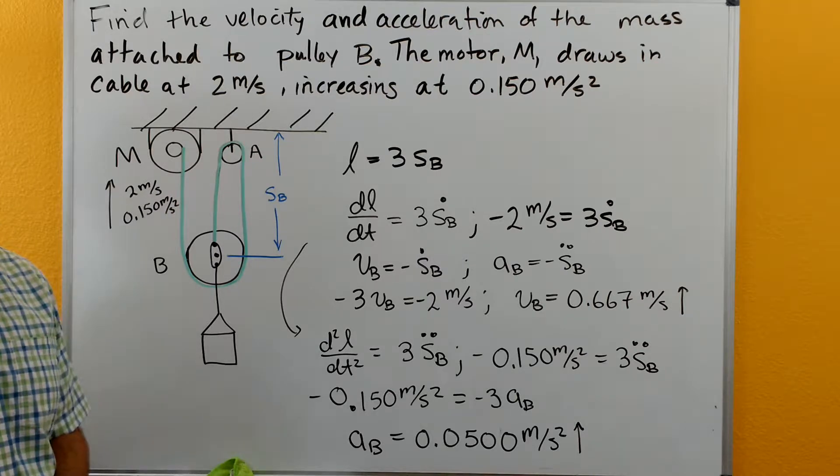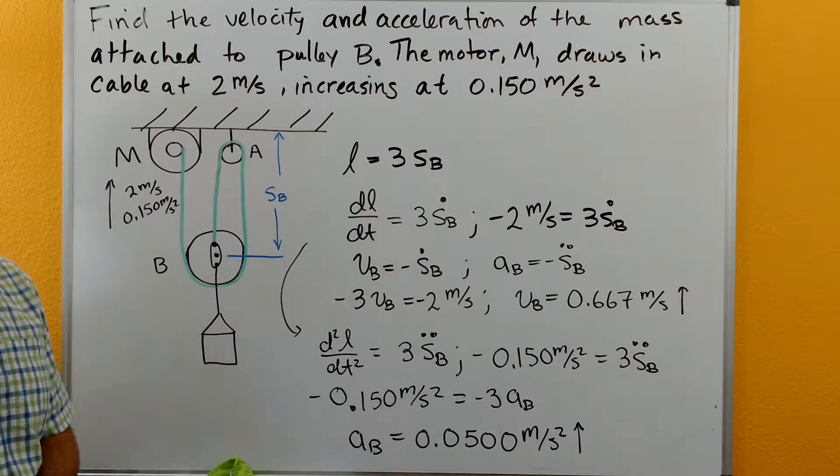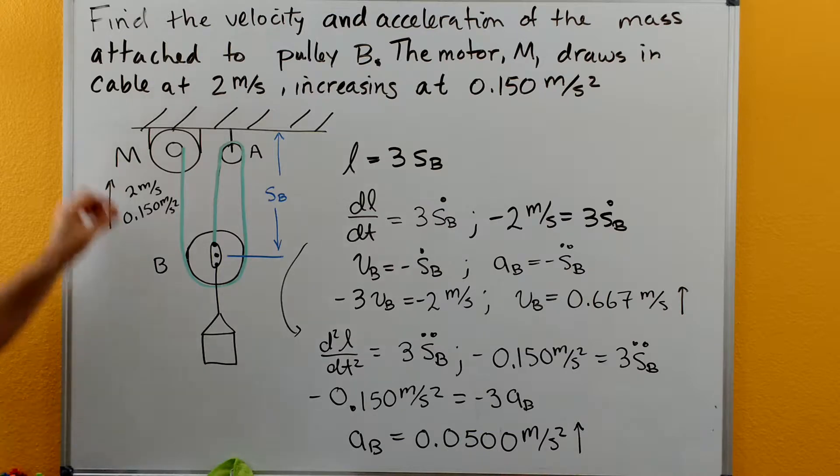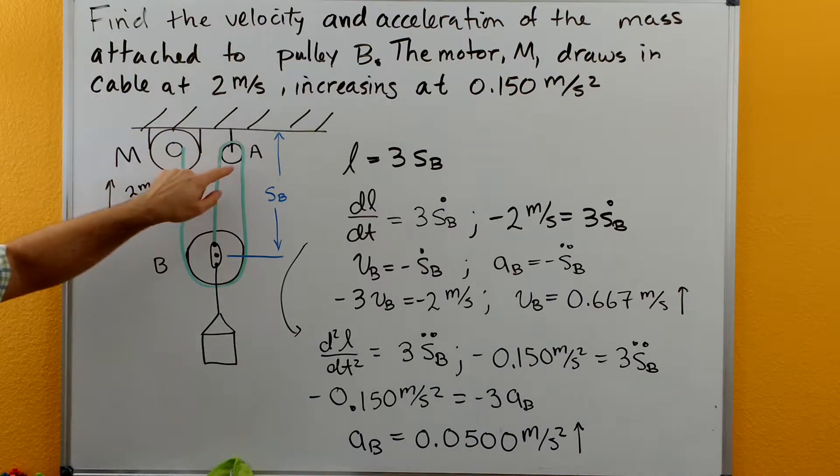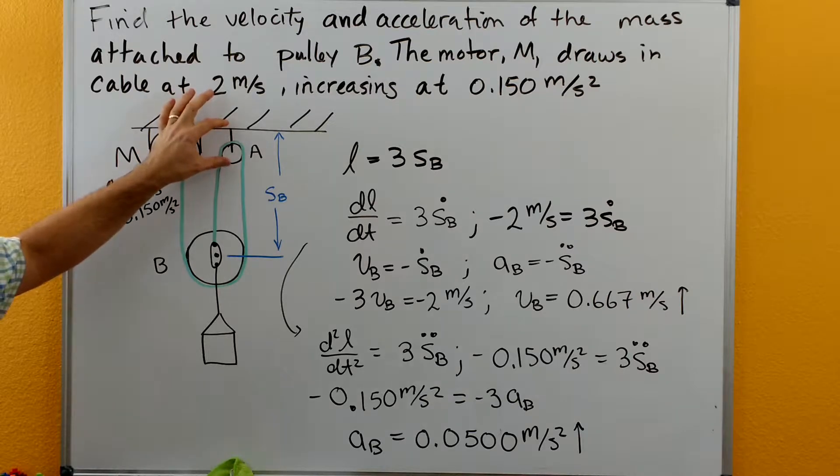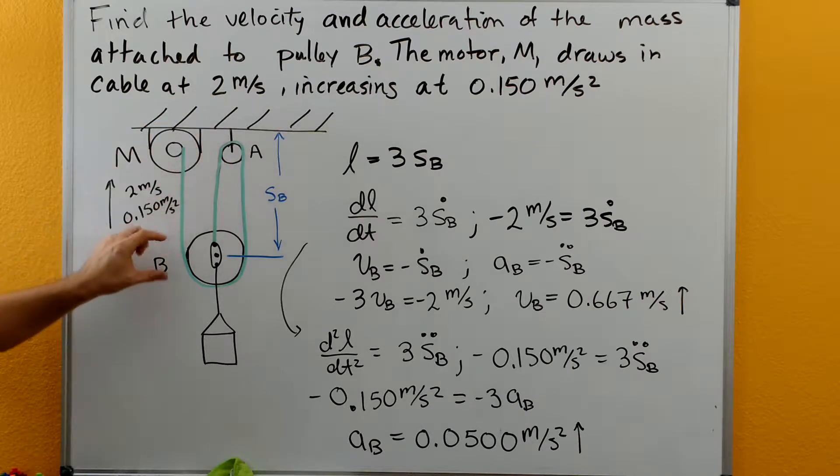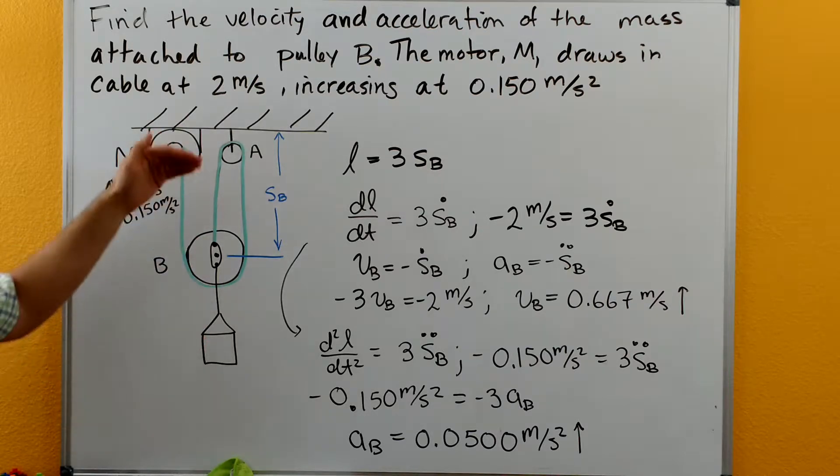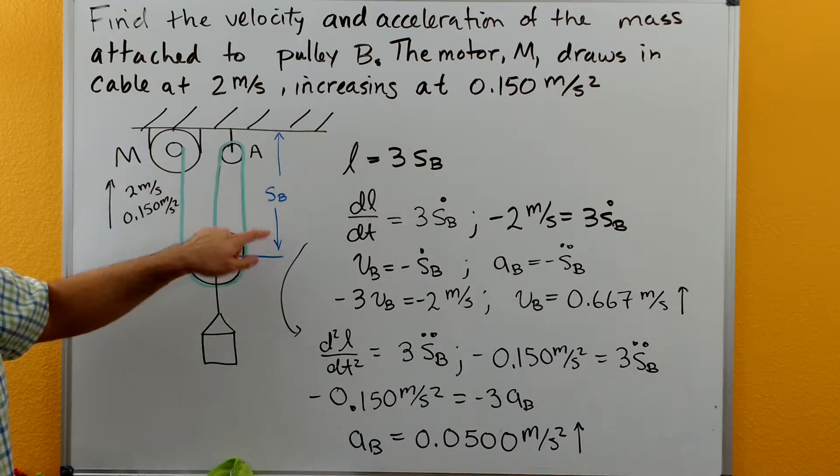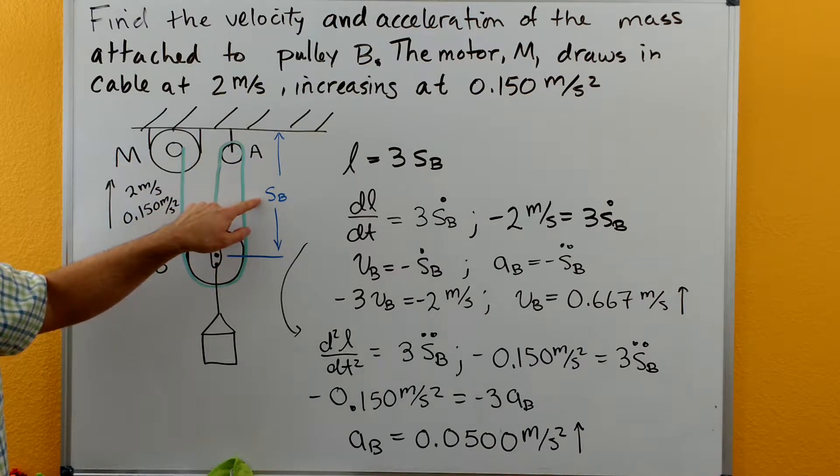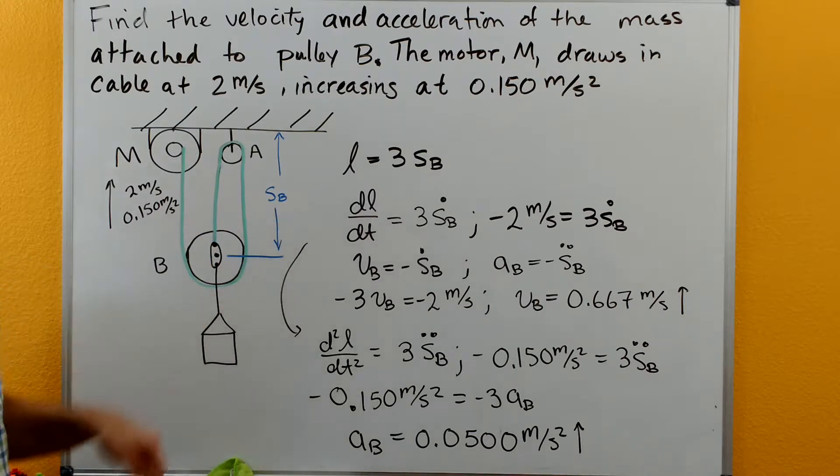The next thing we want to do is track any distance that has the potential of moving. The motor is attached to the ceiling, it's not moving. Pulley A is attached to the ceiling, not moving other than rotating. But pulley B is free to move in the y direction, so we want to track this position. We're going to use S for position, the position of B.